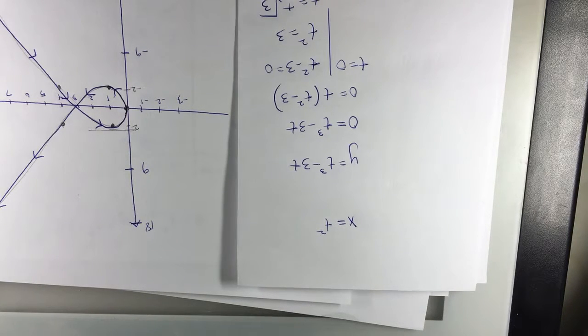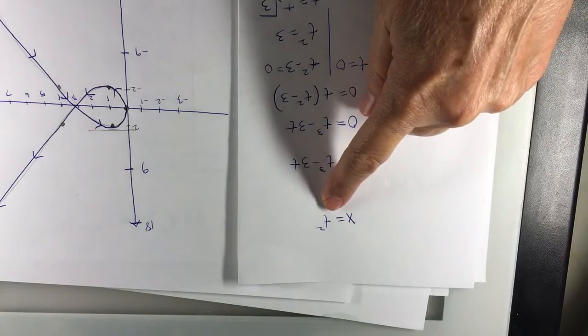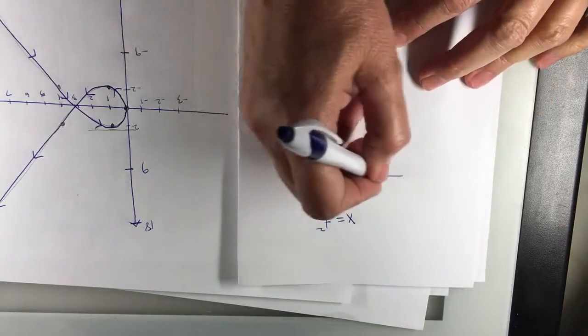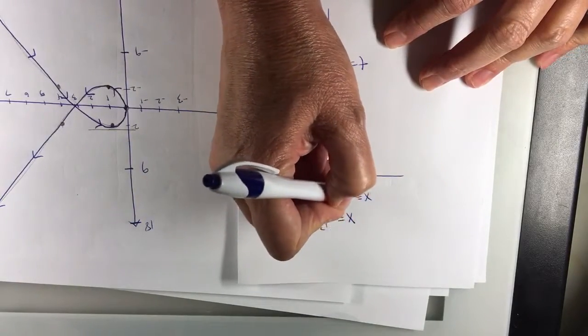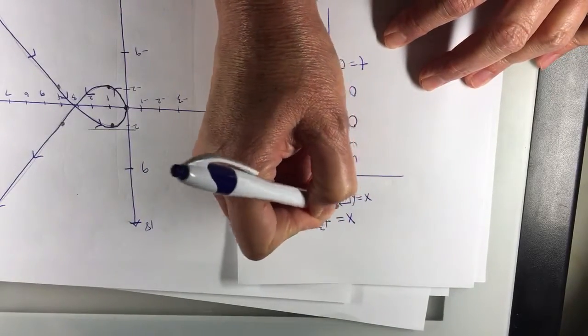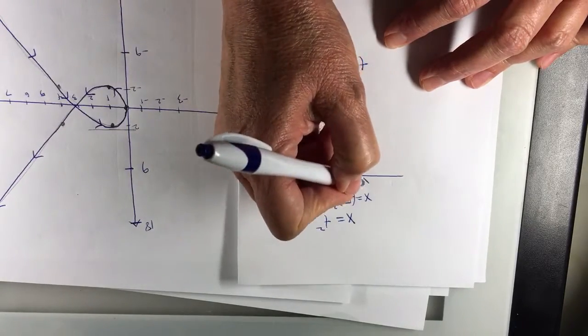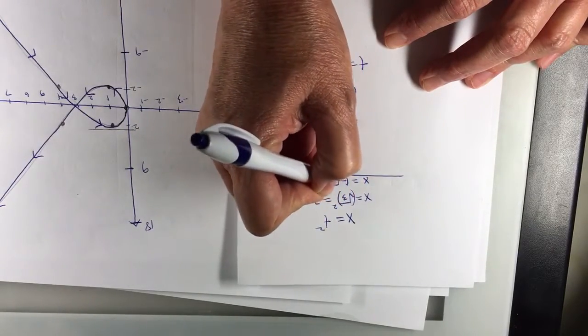So what about when t is the square root of 3? What are you going to get up here? 3. So x is the square root of 3 squared, which is 3.